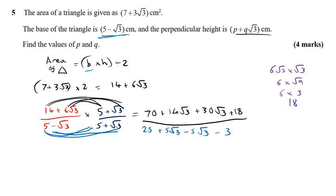After that, we're going to simplify. Simplifying my numerator, first of all, 70 plus 18 is 88, 14 root three plus 30 root three is 44 root three. On my denominator, 25 take away three is 22, and then five root three minus five root three cancel out.